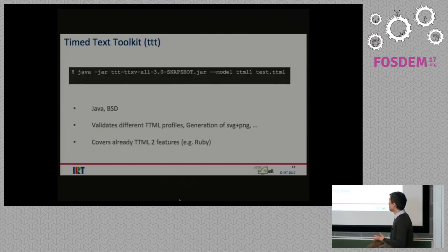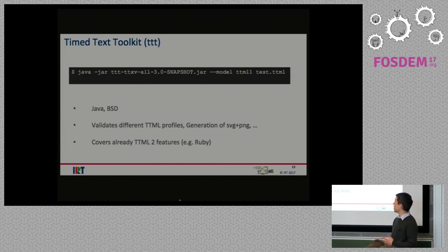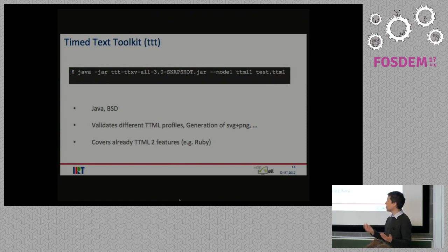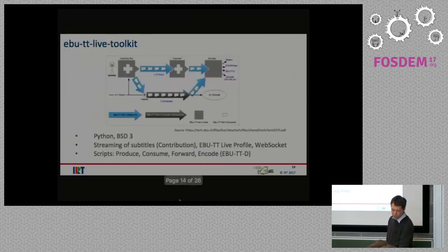The Time Text Toolkit is a really interesting tool. It has different functions and modules you could use — it can validate different TTML profiles, it can generate PNGs and SVGs from TTML, and it already covers some TTML2 features like Ruby, which you would really like to use if you want high-quality Japanese subtitles. The Time Text Toolkit is very helpful if you want to integrate your own implementation as a kind of complement software tool.